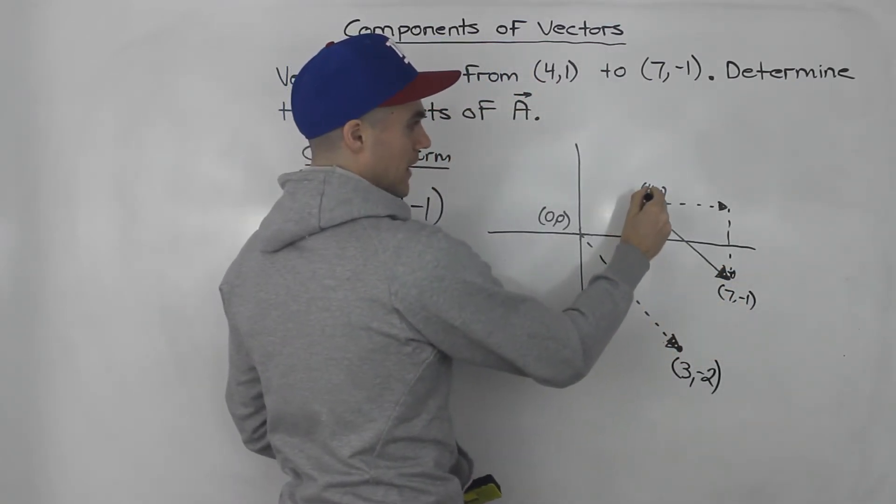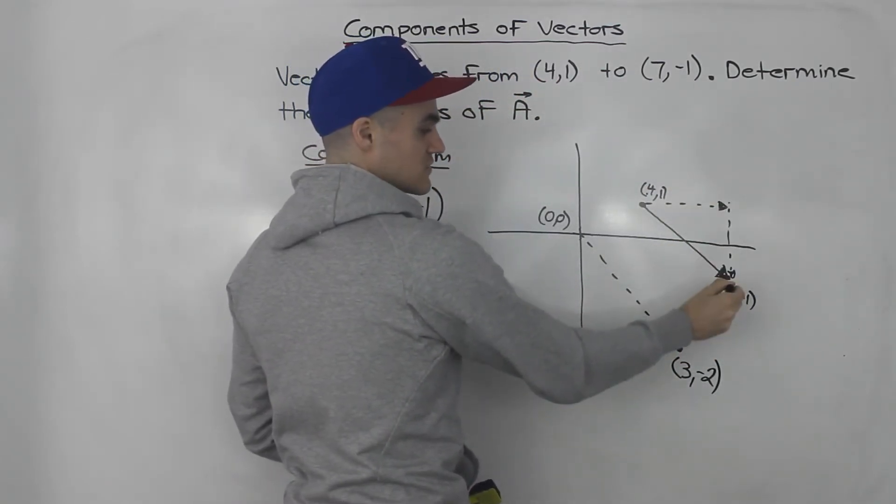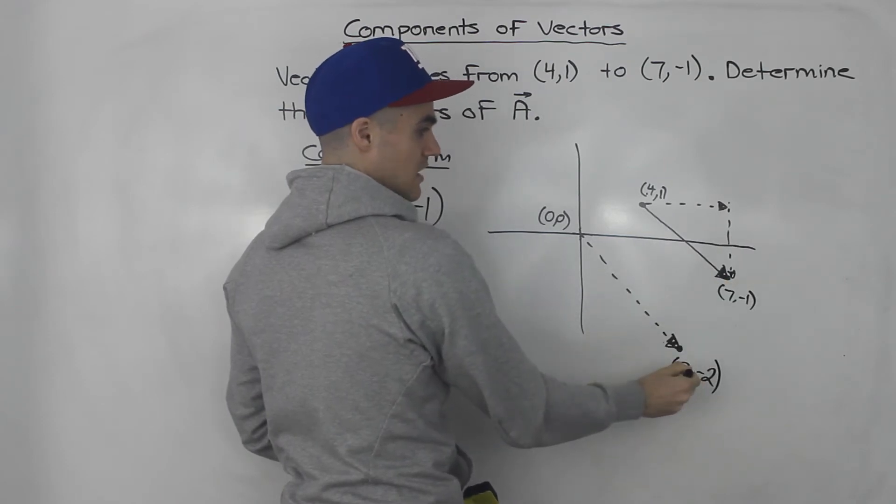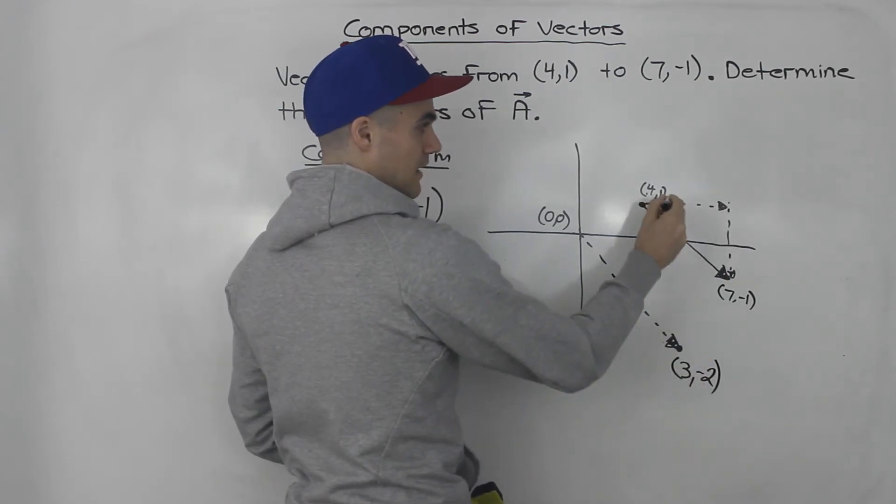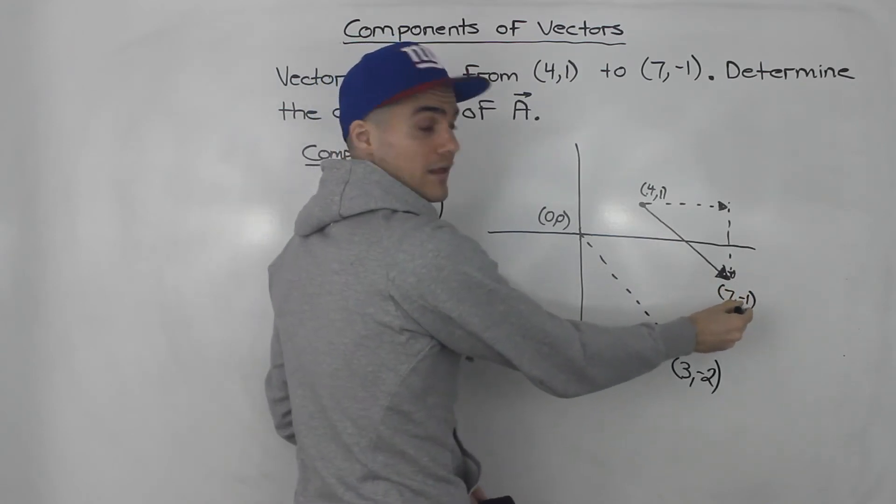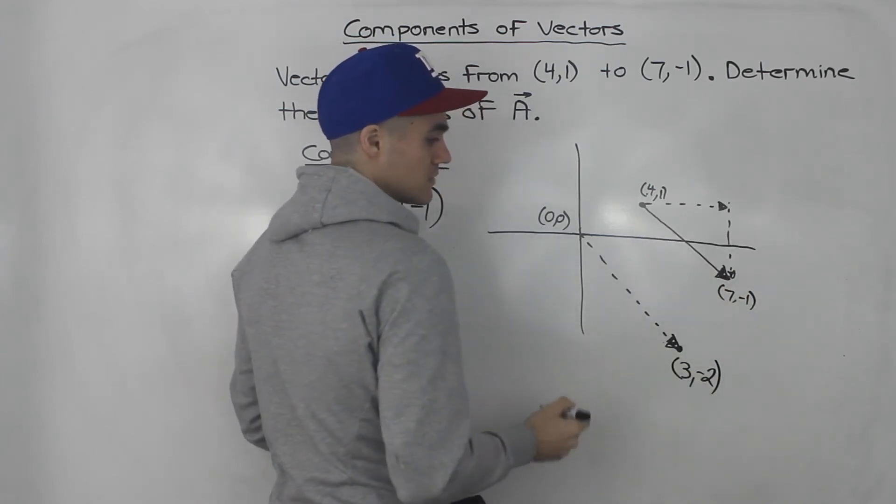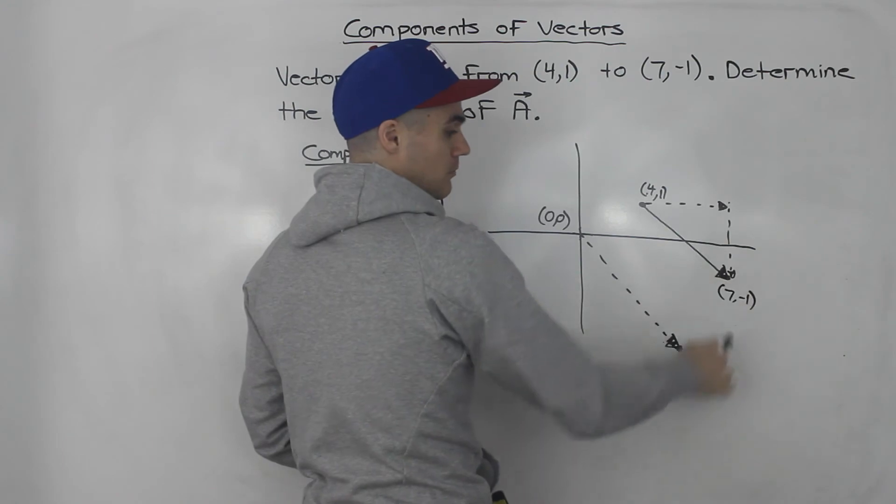From an x value of 4 to an x value of 7, that's a distance of 3. And from a y value of 1 to a y value of -1, that's going down by 2.